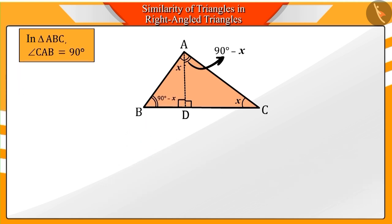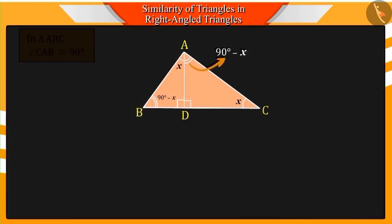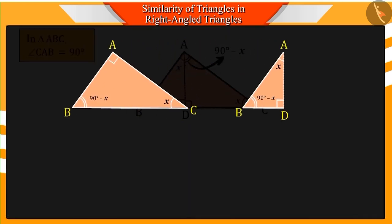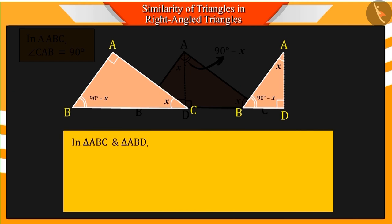Can we make any more observations of these triangles? For this, we focus on triangles ABC and ABD. You will see that angles ABC and DBA and angles BCA and BAD are equal.